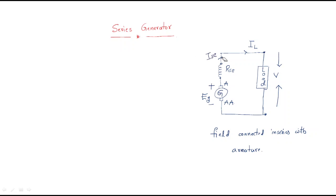The most important thing here is that the armature current, the series field current, and the load current are all the same. The same current flows from the armature through the series field and then through the load. That is the key property of the series machine.